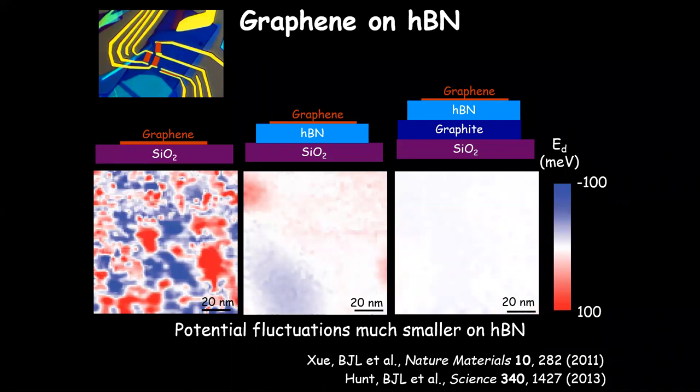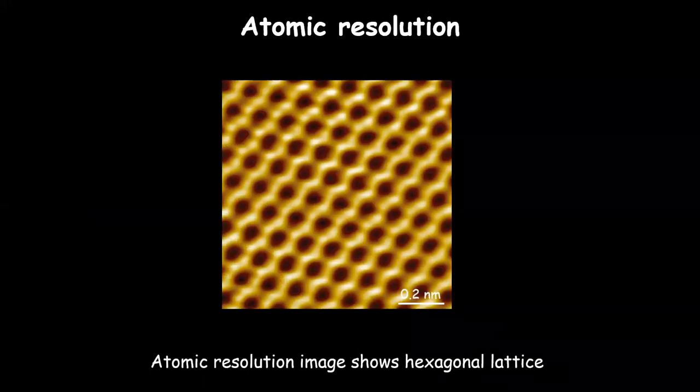That's why if you really want the highest quality devices, you want to use a graphite back gate with an hBN spacer to get the intrinsic properties of the graphene. From this, it looks like hBN is acting as the perfect substrate — having no effect, just cleaning everything up. Indeed, looking with high-resolution imaging, we see exactly that: a graphene lattice on hexagonal boron nitride that is really atomically flat.